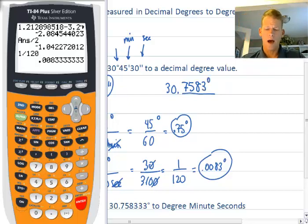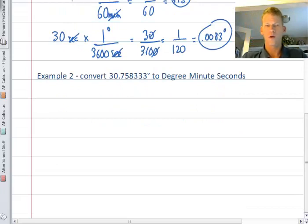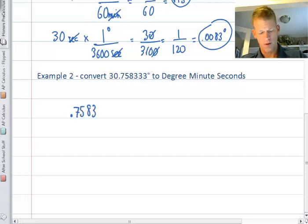Now how do we convert back from decimal degrees to degree minute seconds? We take the decimal portion .7583 degrees. We first want to find out how many minutes are in that decimal. So we multiply this by 60 minutes per one degree. Then we get that answer using a calculator.